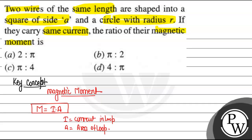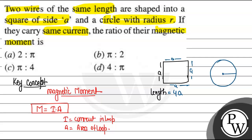We have a square loop and its side length is a. So its total length — that is, the sum of all sides (each side is a) — will be 4a. And we have a circle with radius r, so its perimeter, or circumference, will be 2πr. So 4a equals 2πr, which means 2a equals πr.